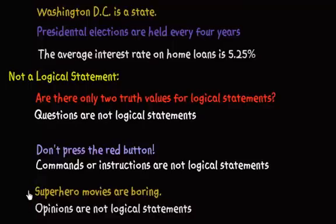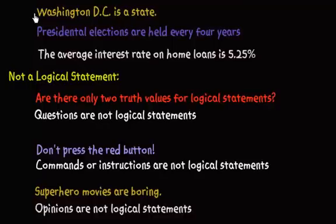Lastly, it's worth mentioning again: when asked which of the following are logical statements, you might look at 'Washington DC is a state,' think 'that's not true,' and confuse not being true with not being a logical statement. Washington DC is a state is a logical statement — it just carries false as its truth value.